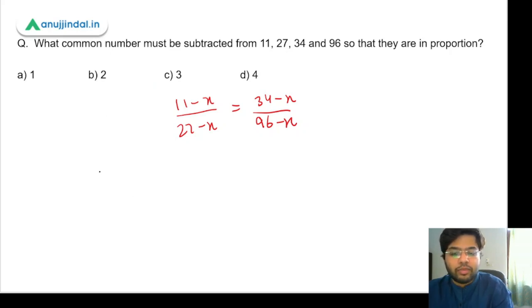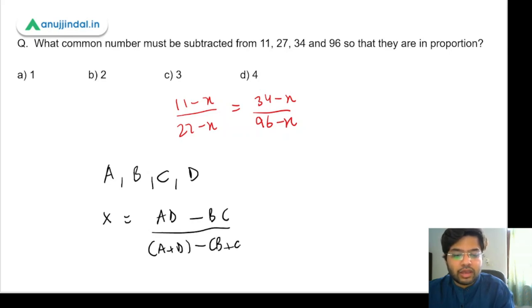Suppose you're given four numbers which must be in proportion, and these numbers are A, B, C, and D. So the number that must be subtracted, let's say it is x. So x can be written as (A into D minus B into C) upon (A plus D minus B plus C). Basically, just take the pairs like extremes is one pair and means are one pair. Multiply them and take a difference, and then add them and take a difference.